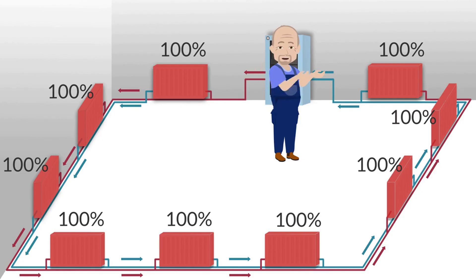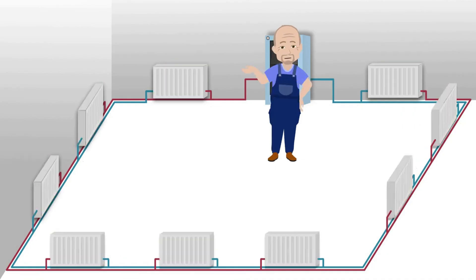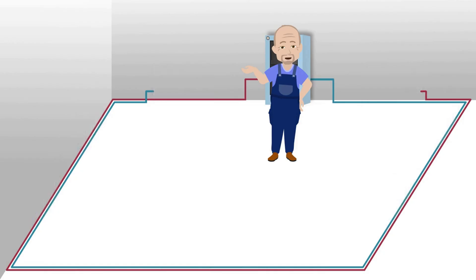It's about the pipes from the boiler to the radiator and back forming a ring. Thus, the total length of the supply and return pipes is roughly the same for each radiator.